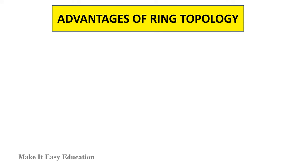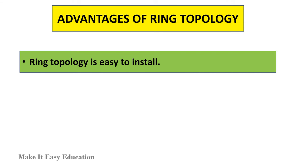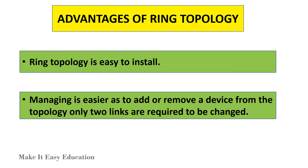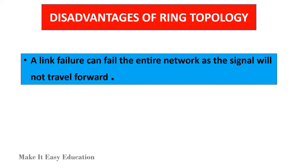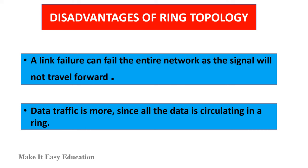Advantages of ring topology: Ring topology is easy to install. Managing is easier, as to add or remove a device from the topology only two links are required to be changed. Disadvantages of ring topology: A link failure can fail the entire network, as the signal will not travel forward. Data traffic is more, since all the data is circulating in a ring.